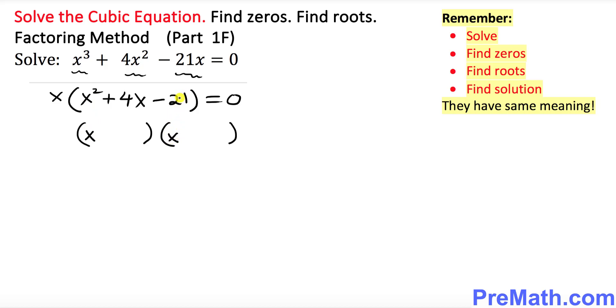Now you see 21. What are the possible factors for 21? 3 times 7. So if you add or subtract, what numbers is it going to be? It's going to be a positive 7 and negative 3.